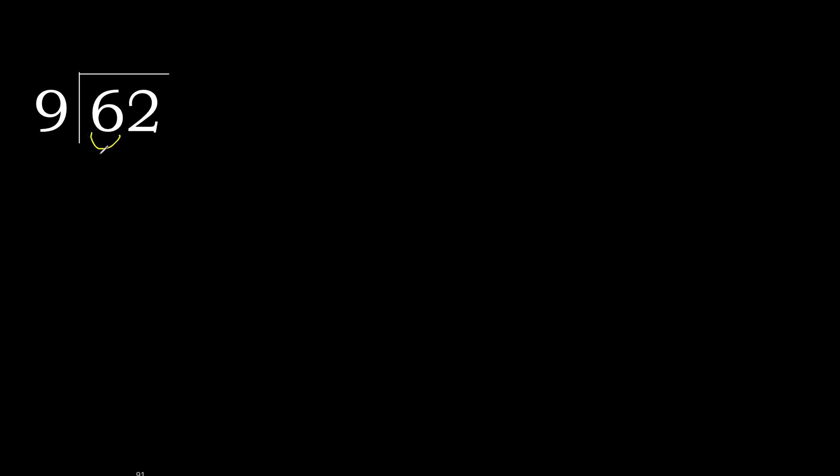62 divided by 9. 6 is less, therefore next. 62 is not less, therefore with 62. 9 — multiply by which number is nearest to 62.